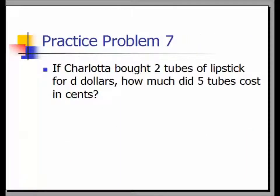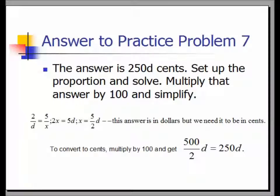Practice problem seven: If Charlotte bought two tubes of lipstick for D dollars, how much did five tubes cost in cents? The answer is 250D. Set up the proportion: 2 over D equals 5 over x. Cross multiplying gives 2x equals 5D, so x equals 5D/2. Because we're converting from dollars to cents, multiply by 100, giving 500D/2, which simplifies to 250D.